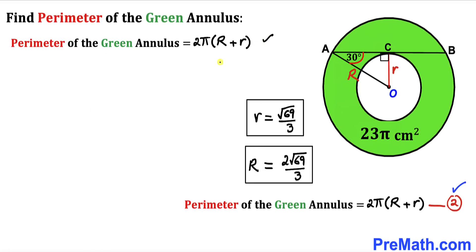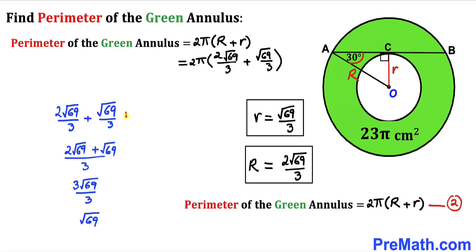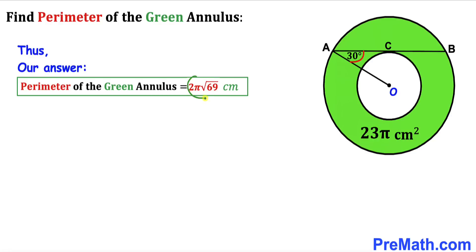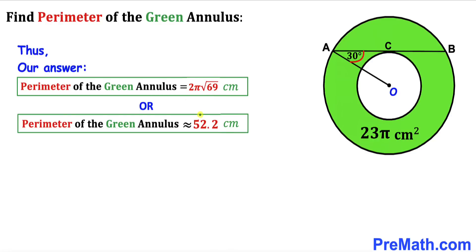Now for the final step, substituting into equation number two: the perimeter equals 2π times (R plus r), which is 2π times (2√69/3 plus √69/3). Simplifying inside the parentheses gives √69. Therefore the perimeter equals 2π times √69 centimeters, which is approximately 52.2 centimeters.